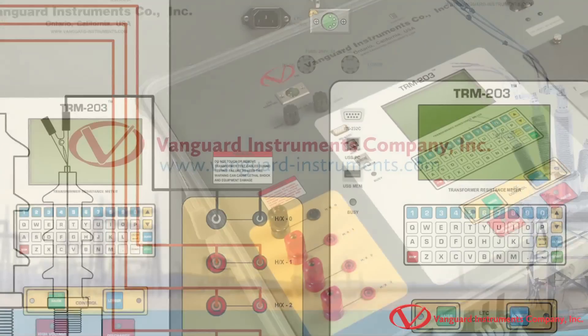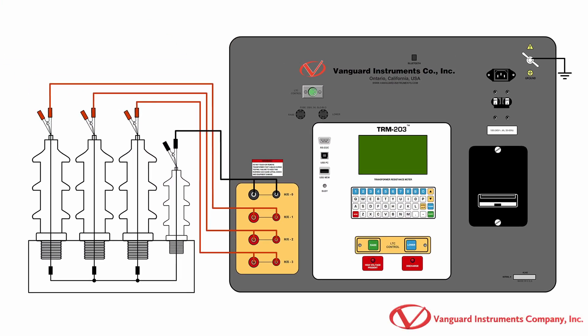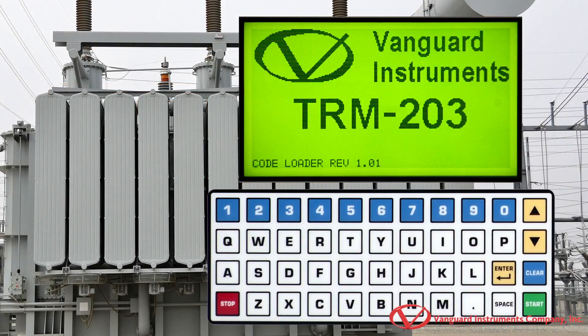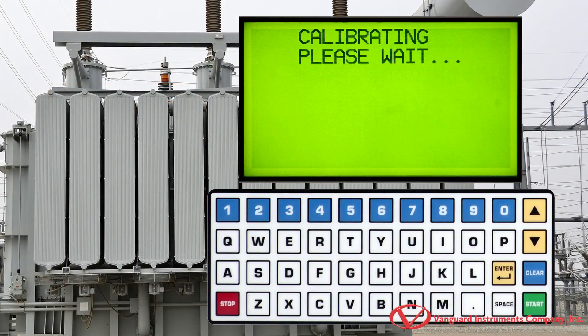Before we can start performing a winding resistance test, we'll need to make the proper connections to the device under test, per this illustration. Once the proper connections have been made, we'll start from the TRM203's main menu.